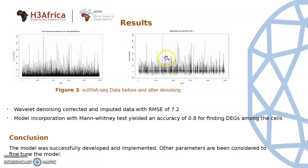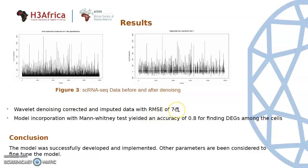It can be observed that after denoising, the data still preserves its important features, which is also a feature of the wavelet transform. The wavelet denoising method proposed correctly corrected the noise and imputed the data with a minimum error of 7.2.